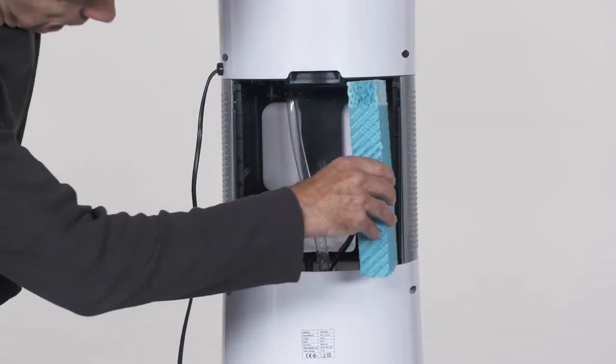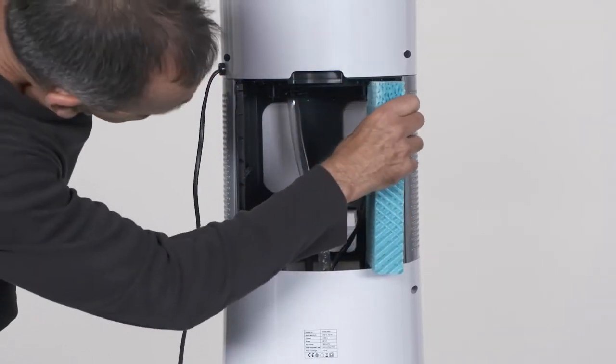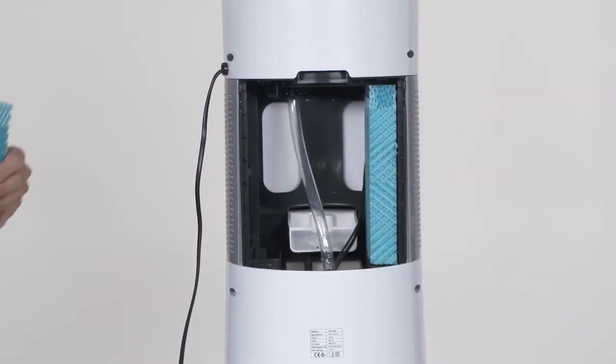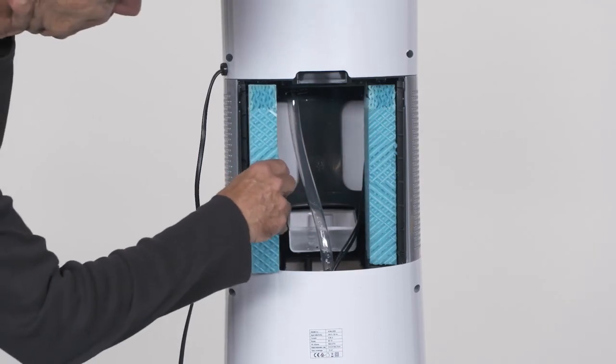Now that the sponges are clean, take one sponge and arrange it so the banded side is up. Lightly push the sponge into the holder on the right side of the unit. Do the same with the second sponge on the left side.